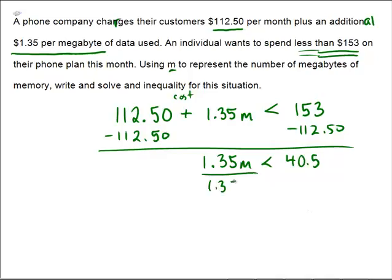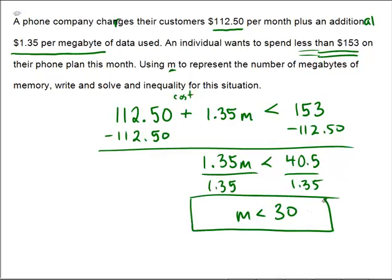Then divide both sides by 1.35. And we get M is less than 40.5 divided by 1.35, which is equal to 30. So if this person wants to spend less than $153 this month, then they need to use less than 30 megabytes of data.